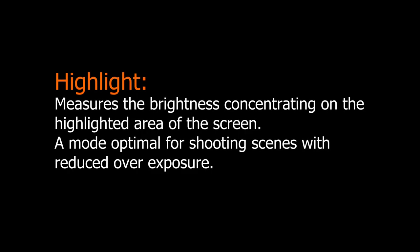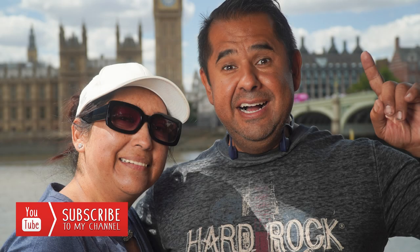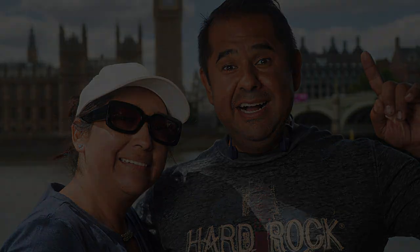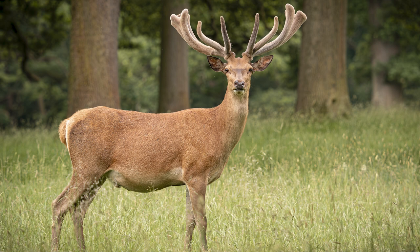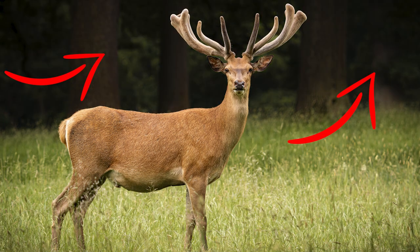Our final metering mode is called Highlight. Sony's manual says it measures the brightness concentrating on the highlighted area of the screen — a mode optimal for shooting scenes with reduced overexposure. When you press the shutter button, the camera automatically detects the brightest area of your scene — in this example it's a lady's hat — and sets the correct exposure for that brightest part. Every other part of the image will be darker or slightly underexposed. The benefit is your photos should never be overexposed, but the downside is darker areas may be very underexposed.